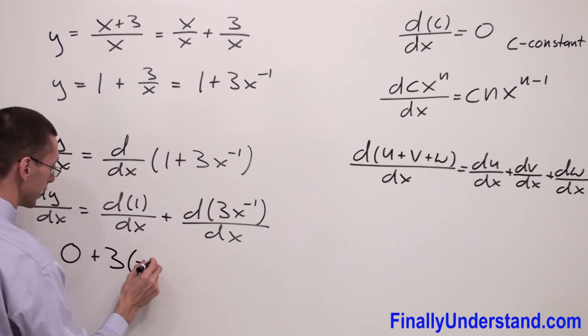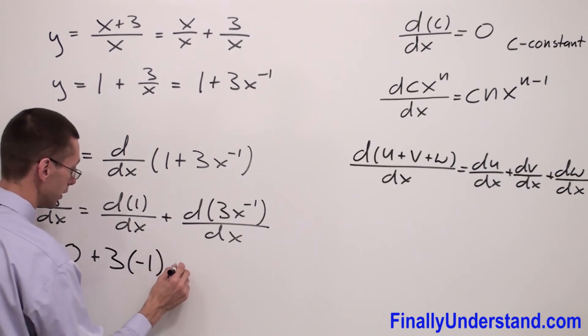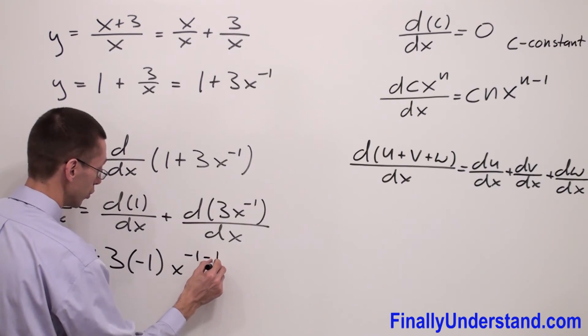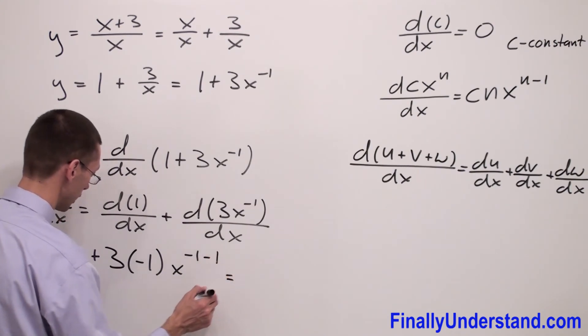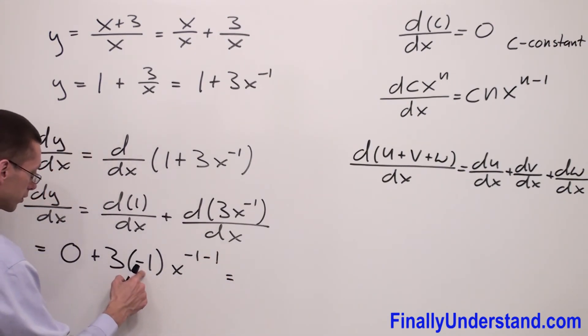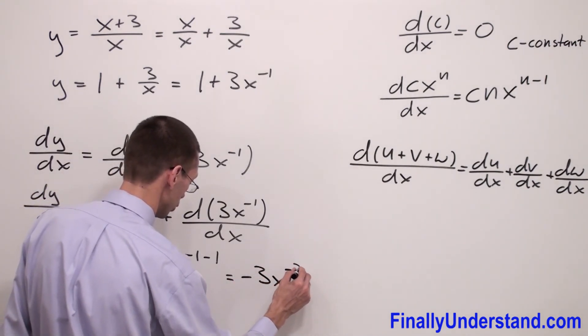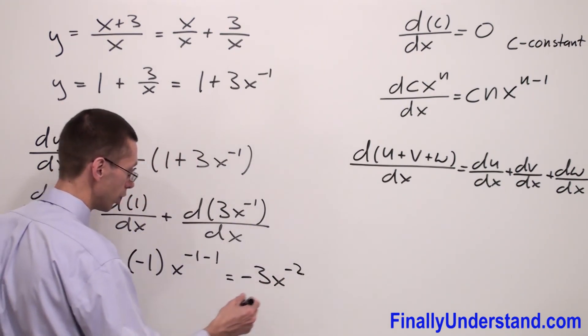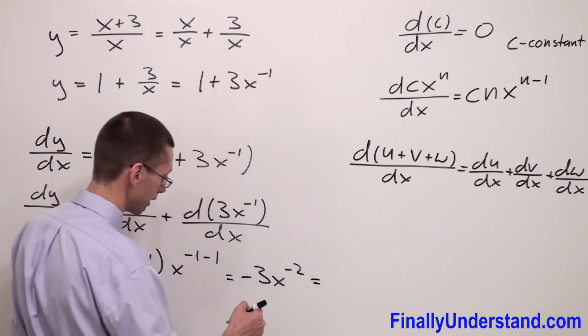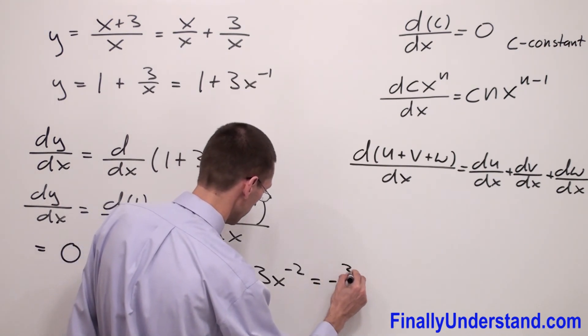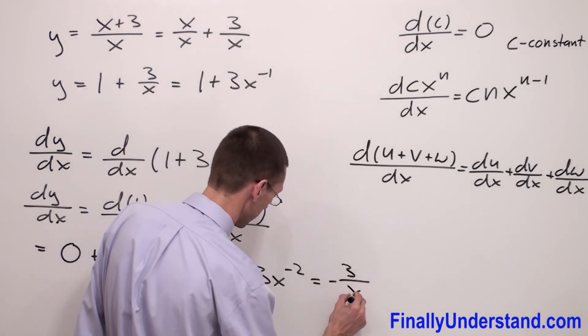So this is equal 3 times negative 1 is negative 3 x to negative 2. This is one of your answers, or you can say that this is negative 3 over x square.